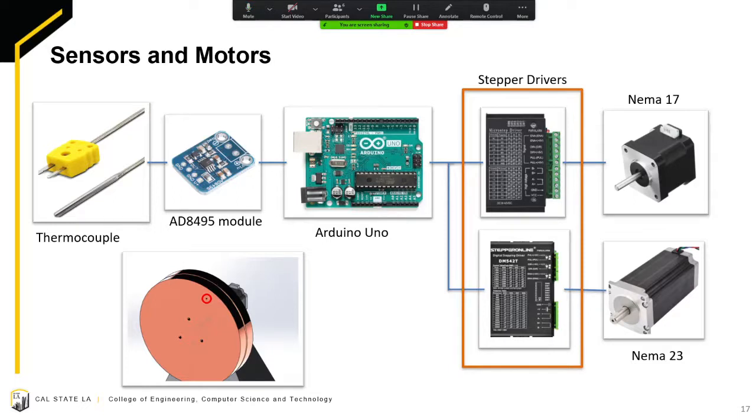Here is an overall system view of the components we will be using. We have a thermocouple to acquire data from the disc. In the bottom left corner, you can see the image of the disc right there with the red circle. That's the hole where the thermocouple will be plugged in. This thermocouple will be connected to an AD8495 module, which is just a signal amplifier that helps the Arduino Uno read those signals. And the Arduino Uno will also be driving stepper drivers. These will be used to drive the motors needed to collect the disc. In this case, the NEMA 23 would rotate the disc and the NEMA 17 will collect the wire.